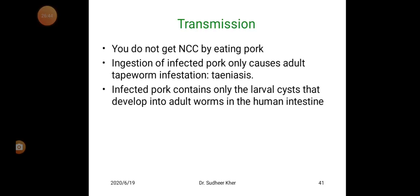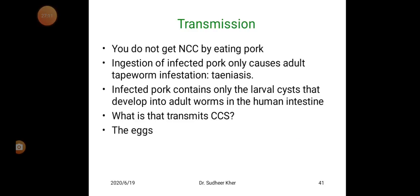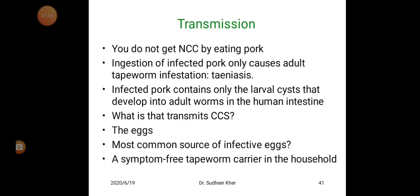We do not get neurocysticercosis by eating pork. Ingestion of infected pork only causes adult tapeworm infestation. Infected pork contains the larval stage cysticercus cellulosae, which develops into adult worms in the human intestine. What actually transmits cysticercosis is the eggs. The most common source of infective eggs is a symptom-free tapeworm carrier in the household.